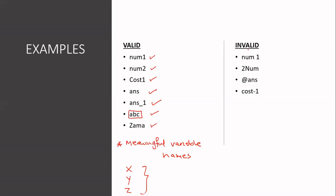These variable names are invalid. For example, 'num one' — the problem here is you should not have a space. This is also invalid: '2num' — we should not start with a number. The third one is invalid because we should not have those symbols. The only special symbol you should use is the underscore. And again, 'num-one' is invalid because we're making use of a dash, which is not allowed when naming variables. So these are some of the valid and invalid variable names.